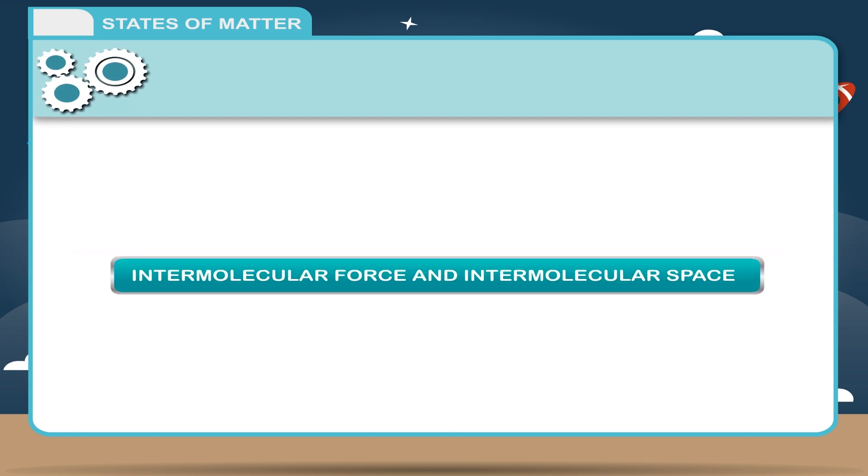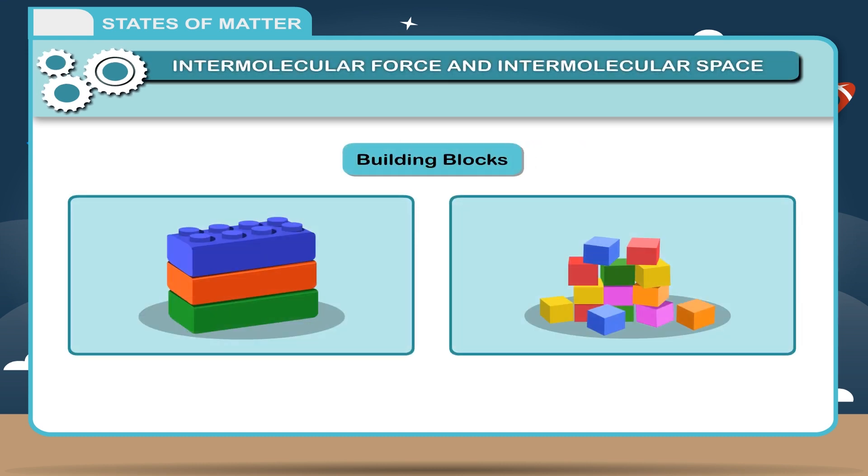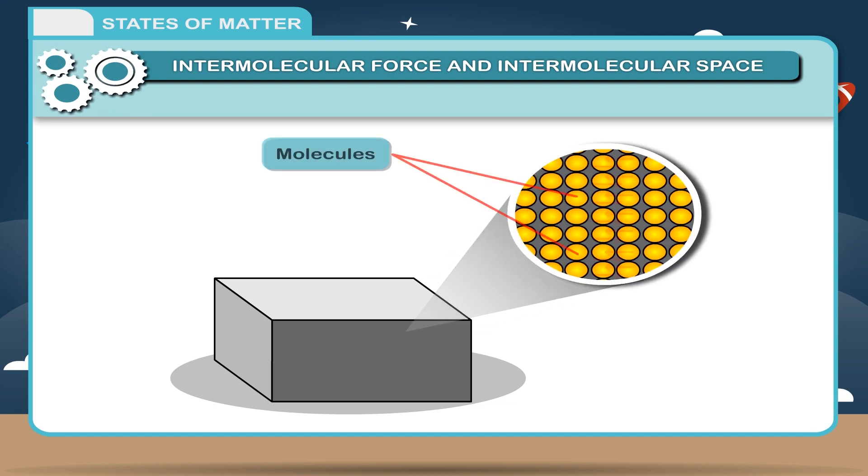Intermolecular force and intermolecular space. As a child, you must have played with building blocks and made different shapes by changing their arrangement. In a similar manner, molecules are the building blocks of matter and different states of matter are due to differences in arrangement of molecules. The space between any two molecules is called intermolecular space.